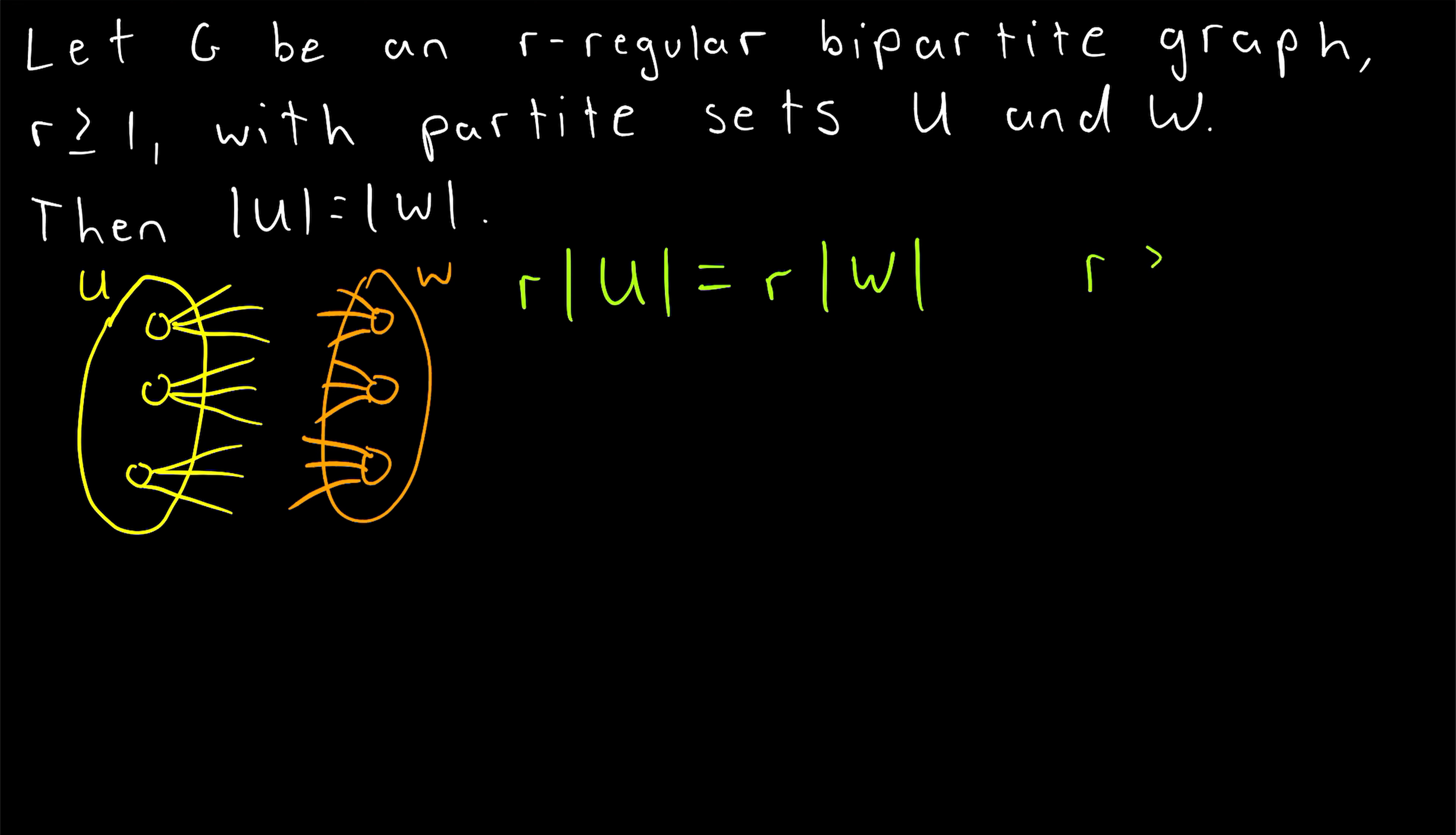And look at that. Thankfully, we've assumed that r is greater than or equal to 1. So r is not equal to 0. So let's go ahead, divide both sides by r, and we've got our result. The cardinality of U is equal to the cardinality of W. The partite sets of our graph have the same number of vertices.